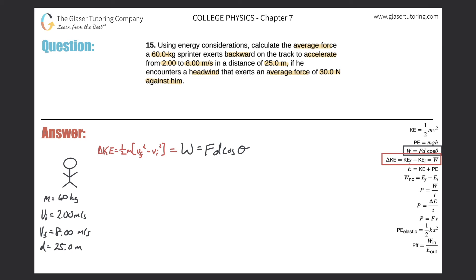We do know the final and initial velocities, so we can find the change in kinetic energy. That would be one-half multiplied by the mass of 60 kilograms, times the final velocity of 8 meters per second squared, minus the initial velocity of 2 squared. Plugging this into the calculator: 0.5 × 60 × (8² − 2²) gives us a value of 1800 joules.